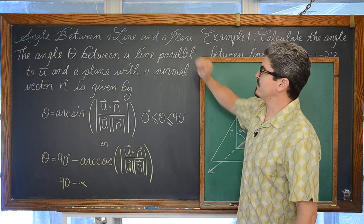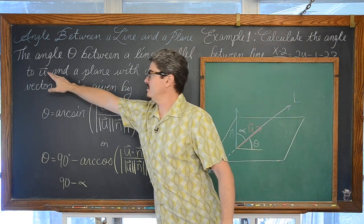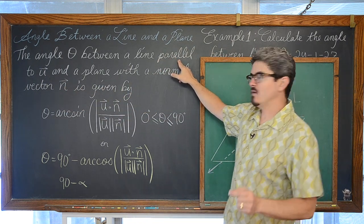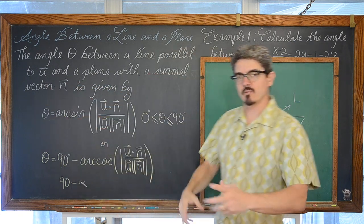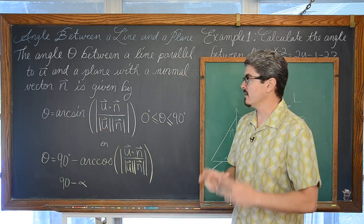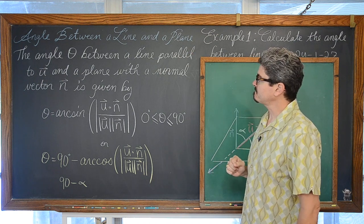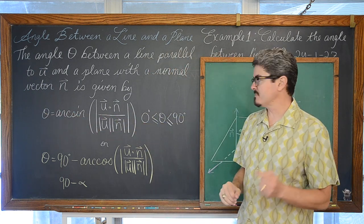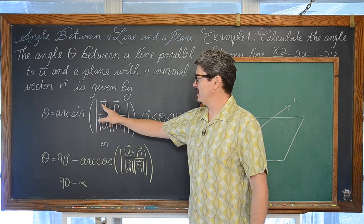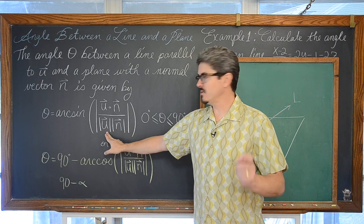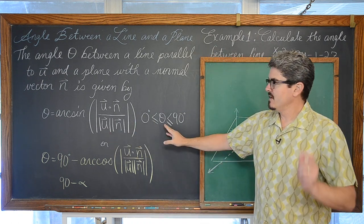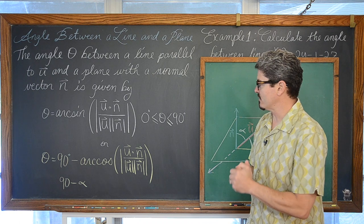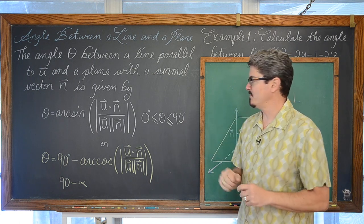The angle theta between a line parallel to vector u and a plane with normal vector n is given by the formula: theta equals arc sine of the absolute value of the dot product of vector u and vector n, divided by the magnitude of vector u times the magnitude of vector n. The absolute value ensures a positive answer, giving us theta between 0 and 90 degrees.